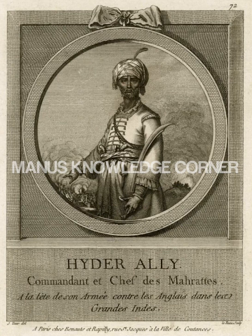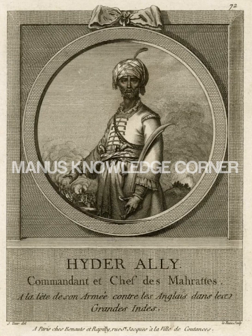In the Third Anglo-Mysore War, Tipu Sultan, the ruler of Mysore and an ally of France, invaded the nearby state of Travancore in 1789, which was a British ally. British forces were commanded by Governor-General Cornwallis himself. The resultant war lasted three years and was a resounding defeat for Mysore. The war ended after the 1792 Siege of Seringapatam and the signing of the Treaty of Seringapatam, according to which Tipu had to surrender half of his kingdom to the British East India Company and its allies.